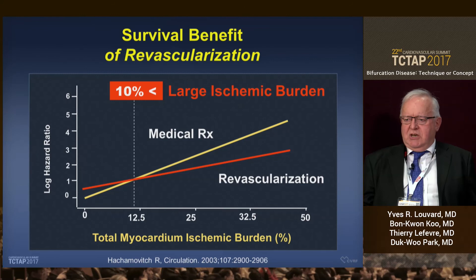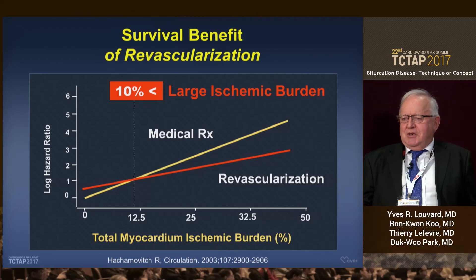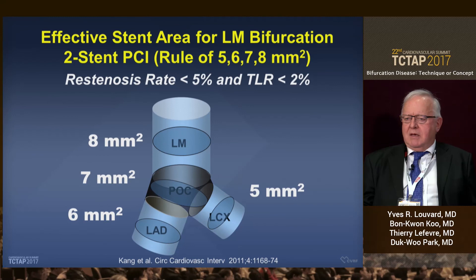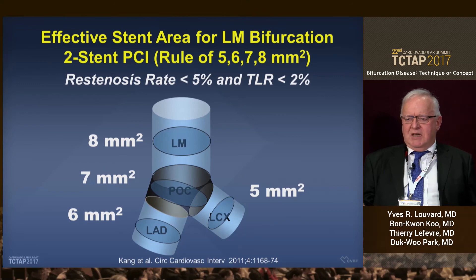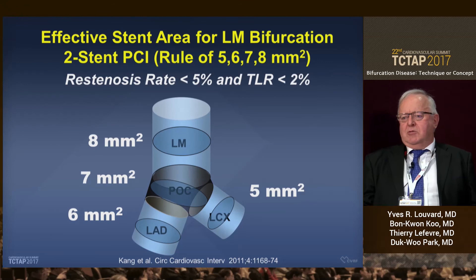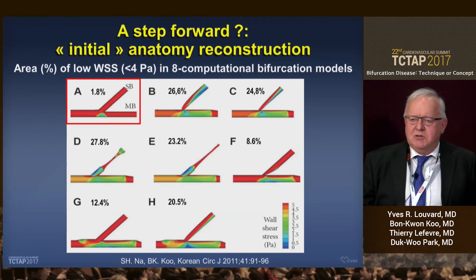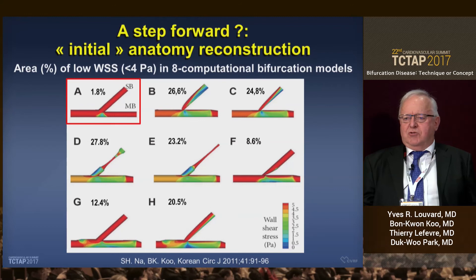Recently, a paper from a Korean team was published saying that a significant side branch has a length of more than 73 millimeters, which is certainly difficult to measure, at least on angiography. Here is the recommendation for good follow-up based on IVUS after left main stenting. It looks a bit like the fractal law, showing that a bifurcation is not just a big tube and a small tube, but is an anatomical and physiological entity with three different diameters. Maybe one of the best options when treating bifurcation lesions is to reconstruct the initial anatomy. The most limited surface of low wall shear stress — a pro-atherogenic factor — at 1.8% corresponds to the initial anatomy of the bifurcation.